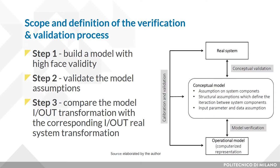The second step: validate model assumptions. There are many assumptions made during building modeling, of two types — structural and data assumptions. Structural assumptions involve simplification of reality; data assumptions are based on collection of reliable data. The third step: compare the model's input-output transformation to the corresponding input-output transformation for the real system. Real data of the system must be available in order to perform these tests.